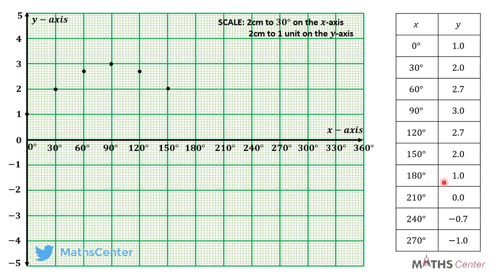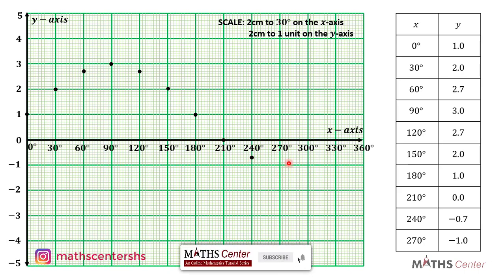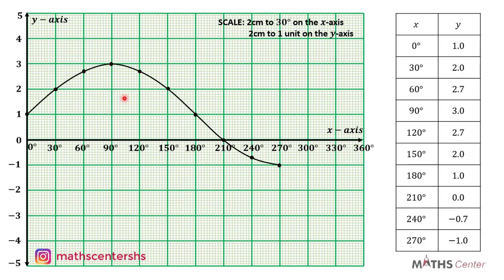The next point is 180 degrees, 1.0. Then 210 degrees, 0.0 on the y axis. The next is 240 degrees, negative 0.7 on the y axis. And the last one is 270 degrees on the x axis, negative 1.0 on the y axis. After plotting the points, you join them freehand to get the curve. This is the curve of the relation y is equal to 2 sin x plus 1.